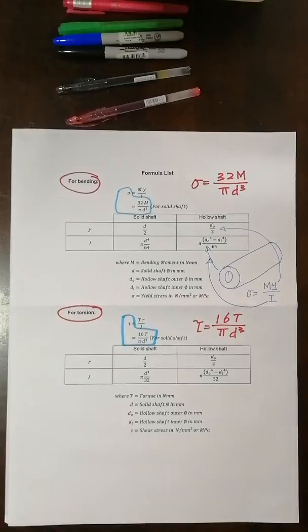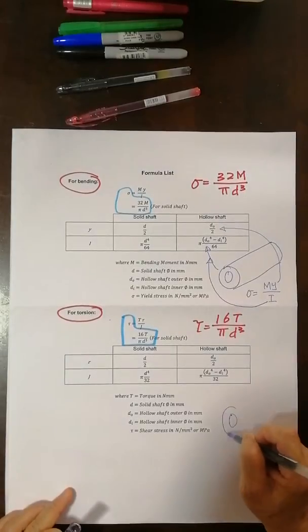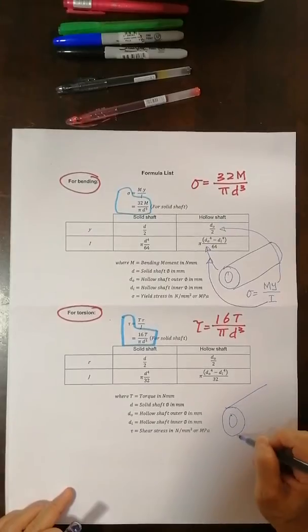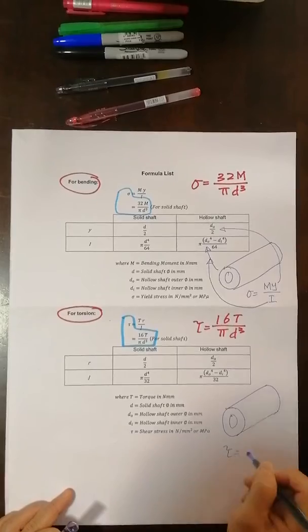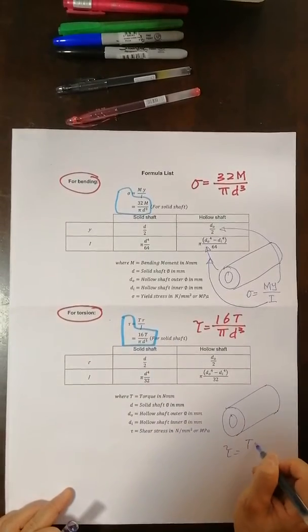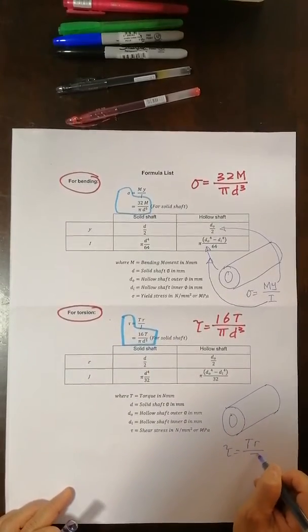Now if it is a hollow shaft, if again it's a hollow shaft, then you change it a bit. We will not use this equation, we will use stress equal to TR over J.